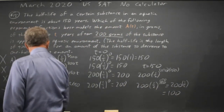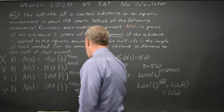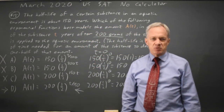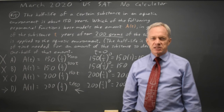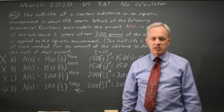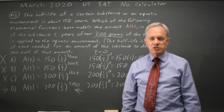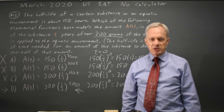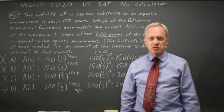Choice D does in fact give us the correct amount both initially and at 150 years, so that's the correct answer. The College Board will always have questions somewhere on the SAT about exponential growth and decay and fitting a model to a word problem like this. Make sure you review this concept carefully and come back soon for my next SAT video.